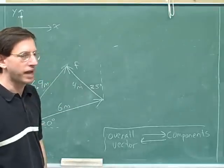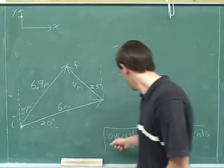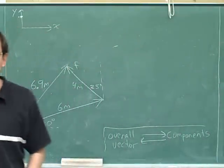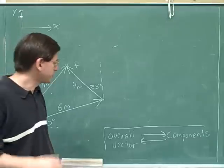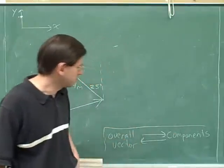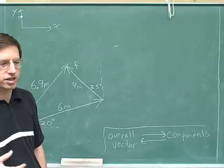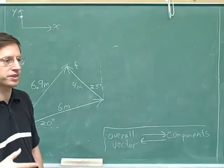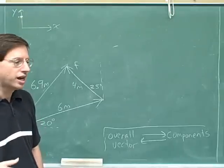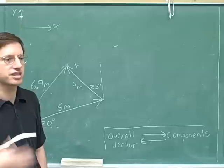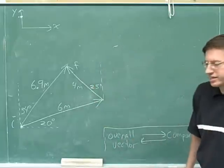We're pretty much at the end of this series of videos on how to break vectors into components and how to build the components back up into the overall vector. We've learned the trigonometry needed to carry out these two operations. One of the main issues we've dealt with is signs — how to correctly get positive and negative signs on the components. I also introduced a dot notation for the magnitude of a component, which I think is useful for beginning students.